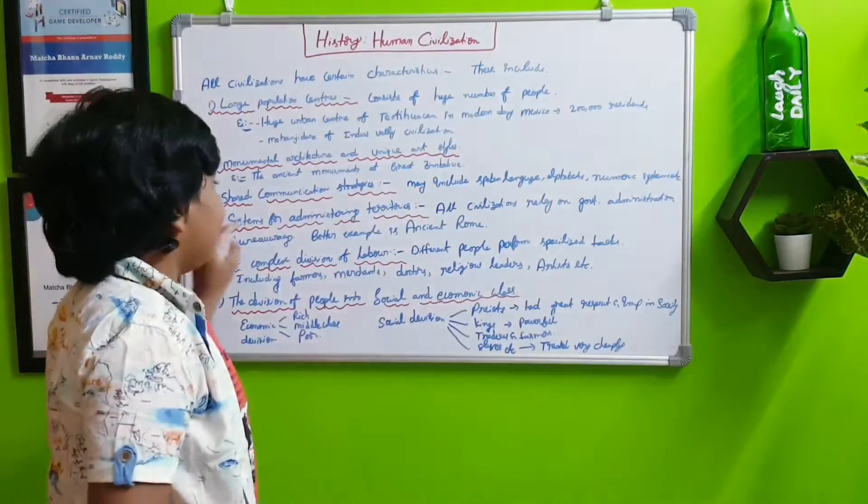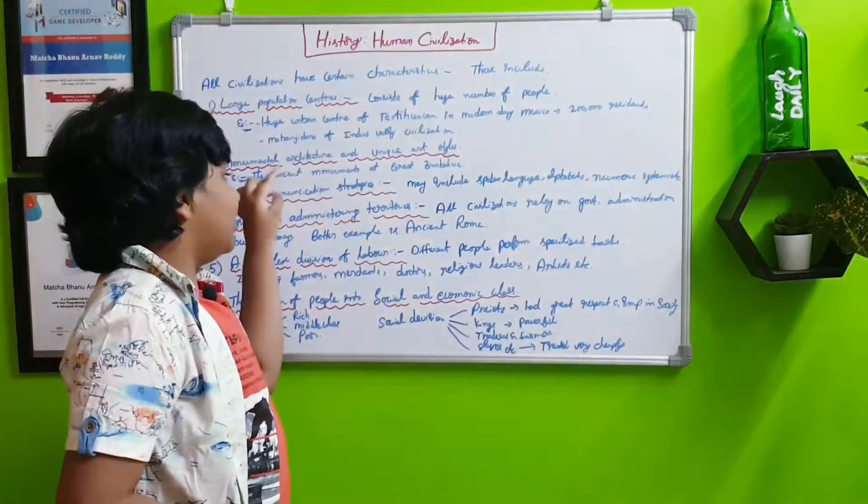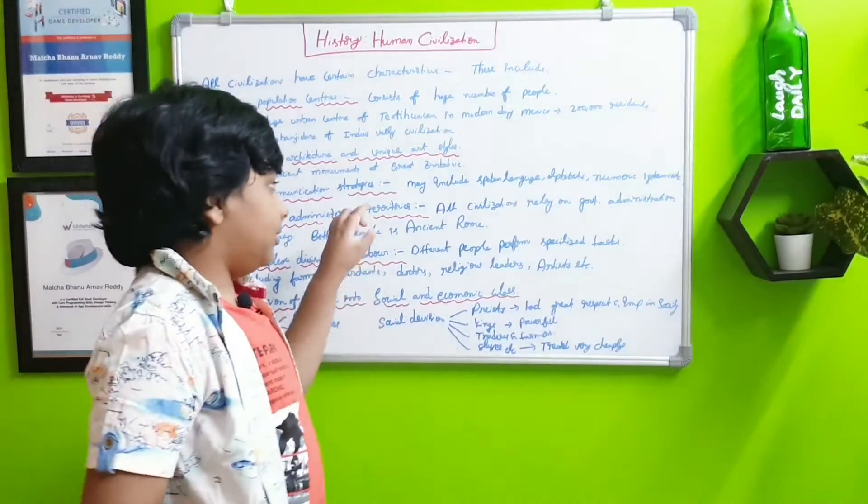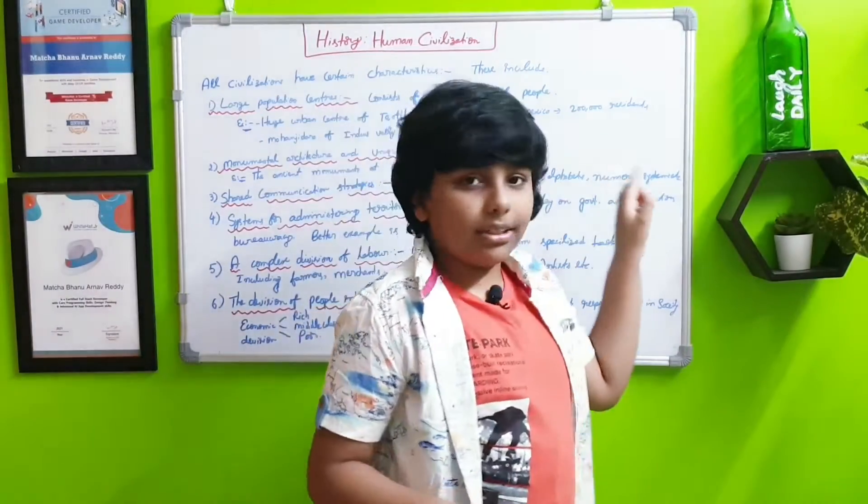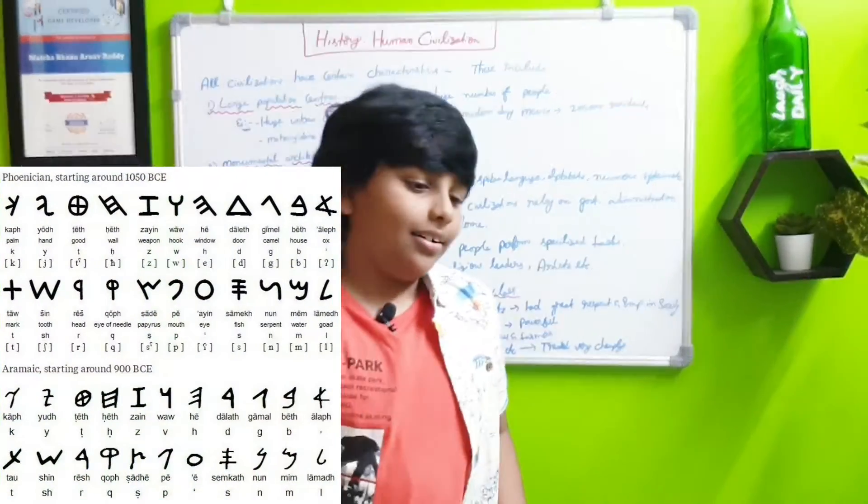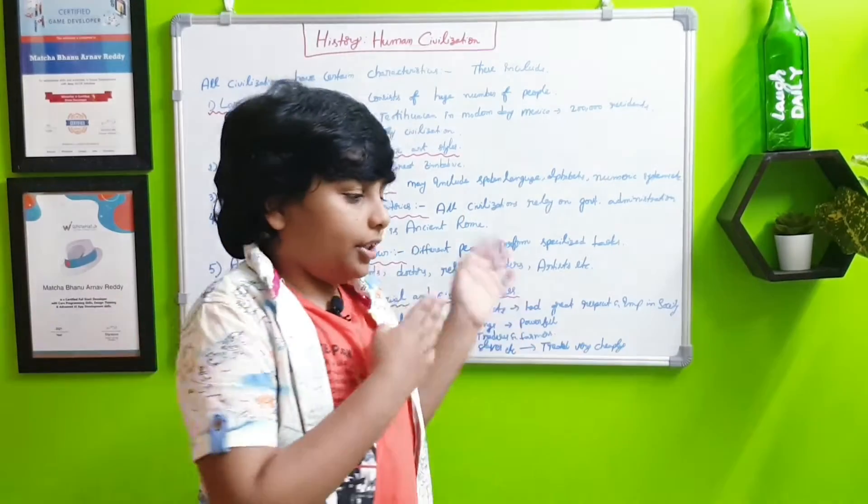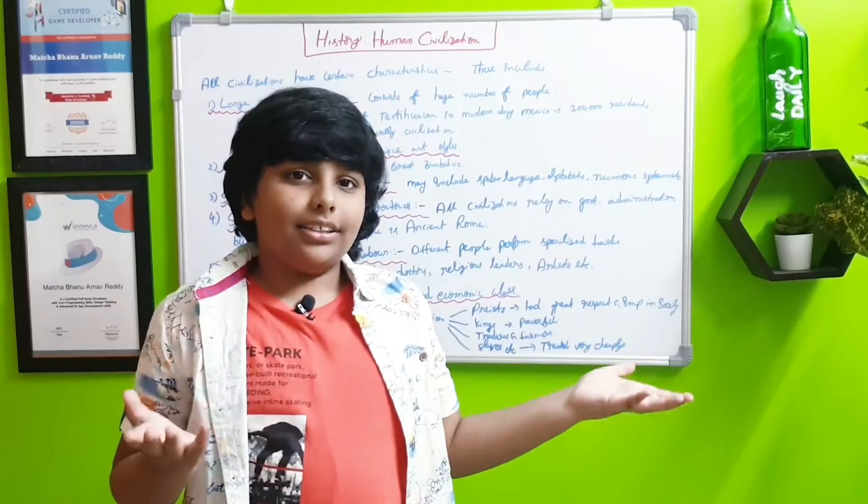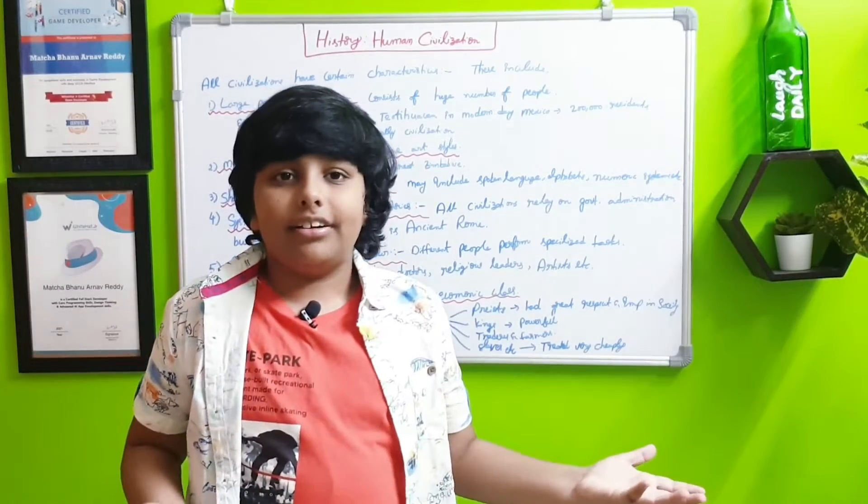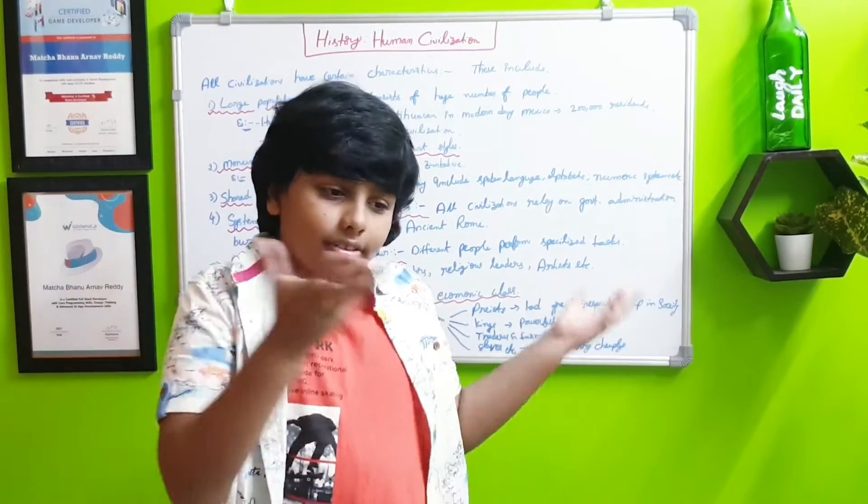The next is which is the third: shared communication strategies, which may include spoken languages, alphabets, numeric systems, etc. Like we can use them to just communicate and just to cooperate with each other instead of using sign language which I can't even understand.